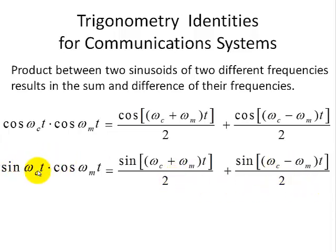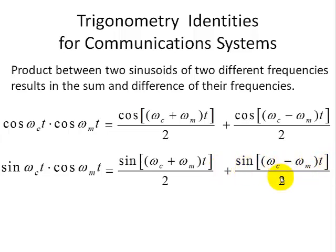Multiplying sine(omega_c * t) times cosine(omega_m * t) results in sine(omega_c + omega_m)*t divided by 2, added with sine(omega_c - omega_m)*t divided by 2. Again, we have multiplying two sinusoids resulting in the sum and difference frequencies.